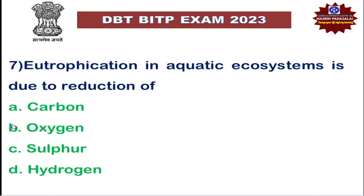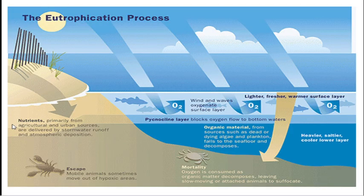Next: eutrophication in aquatic systems is due to reduction of oxygen — oxygen will be heavily depleted. Eutrophication means excessive growth of plant and algal growth in a water body. This occurs when there is excessive bioavailability of factors required for photosynthesis, like more carbon dioxide, more sunlight, and more nutrients, leading to excessive plant and algal growth.